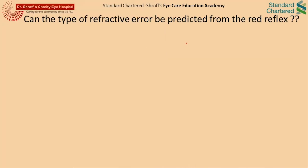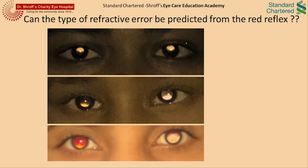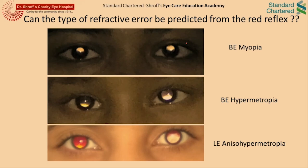One would wonder whether the type of refractive error may be predicted by the red reflex — and yes, it can. As seen in the following photographs, the location of the crescents in the pupil depends on the type of refractive error. For most smartphones, the location of the flash is such that a superior crescent is formed in myopia and an inferior crescent is formed in hyperopia. A difference in the size of the crescents signifies anisometropia, with the larger crescent forming in the eye with the higher refractive error.